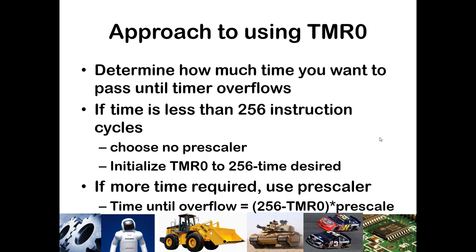To use Timer 0, first determine how much time you want to pass until the timer overflows. This is like setting an oven timer — you set it, walk away and handle other things, and it alarms when time is up. The way it works is you preset TMR0 to a value low enough that as it increments, it overflows after the desired amount of time. If the time needed is less than 256 instruction cycles, use no prescaler and initialize TMR0 to 256 minus the desired count.